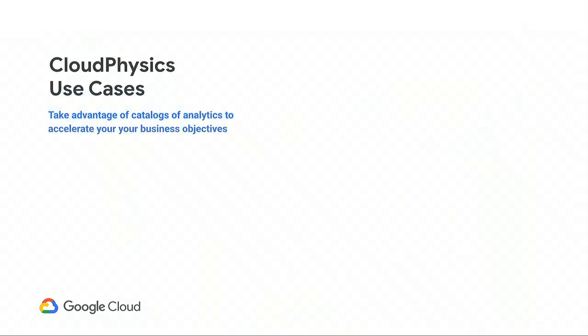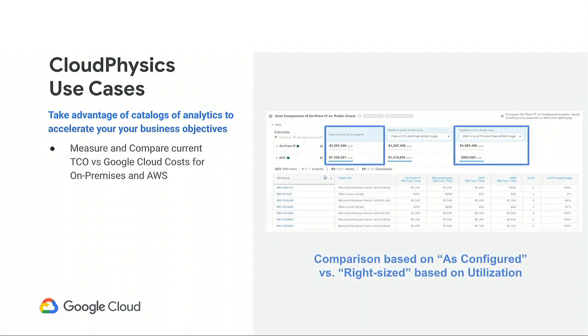We have multiple use cases to talk through. Getting a view of what's going on inside your data center is the first part of the platform. Once we have performance data and configuration data, we can start doing costing and modeling. One of the core functionalities allows us to model approximate costs of resources and estimates of how much the data center costs to operate today — an ROI and TCO type analysis — getting visibility into the hardware, resources consumed, services, and power.